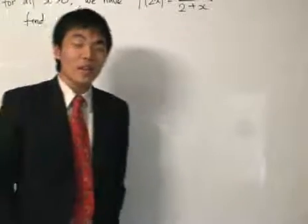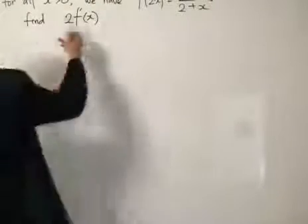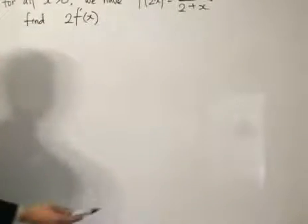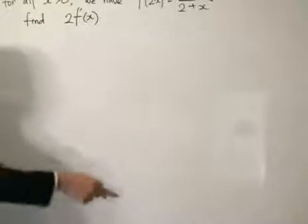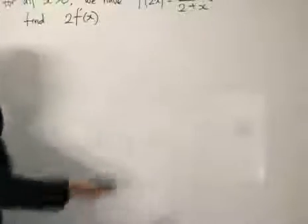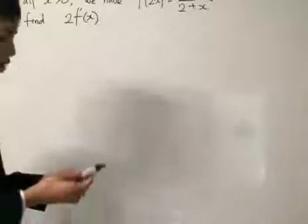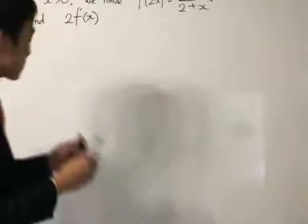We'll quickly go through a standard functions question. If x is more than 0, we have this function over here: f(2x) = 2/(2+x), and we want to find 2 times the function of x.